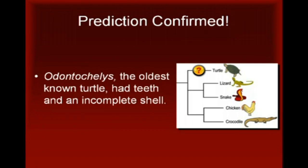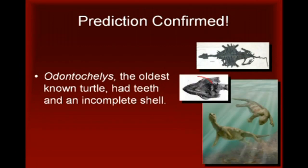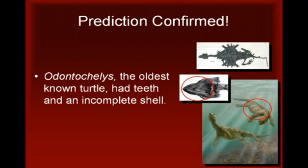This prediction was confirmed by the discovery of the fossil remains of the oldest known turtle in deposits from China. Three specimens of this species, named Odontochelys, were fossilized in rocks dating back to 220 million years ago. Just as predicted, this intermediate form had a full set of teeth and no beak. Also as predicted, it had a complete lower shell and an incomplete upper shell made from broadened ribs and backbone. This evidence confirms the hypothesis that the lower shell evolved first, followed later by the upper shell.